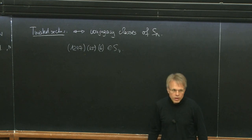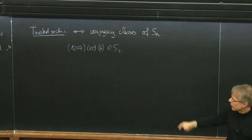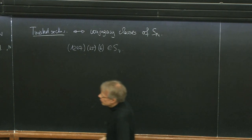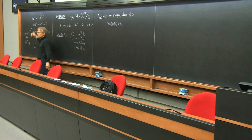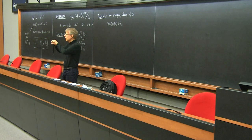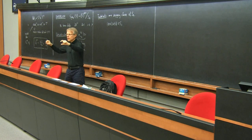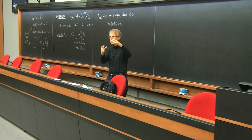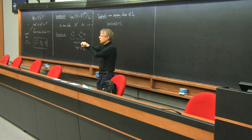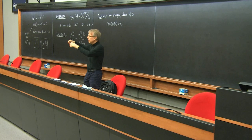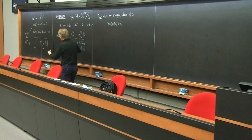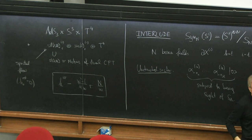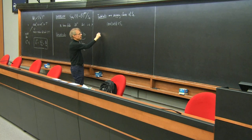The twisted sector is labeled by a partition or cycle shape of a permutation of order N. We are trying to describe the CFT dual of string theory on ADS3, looking at perturbative string theory with states made from one string. The single trace operators — single particle states — are what you expect. Multi-trace states come from multi-string states. The single particle states described by a single string correspond to the states coming from a single cycle twisted sector.